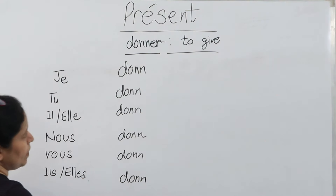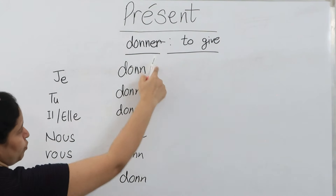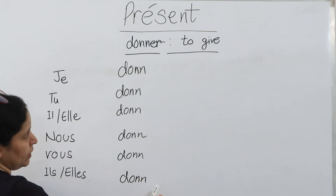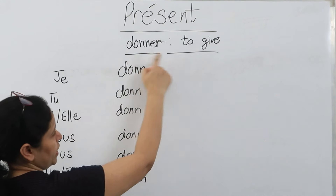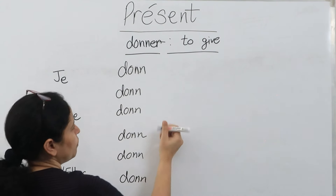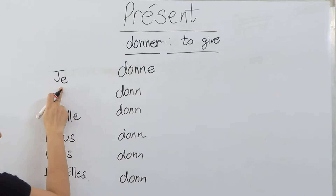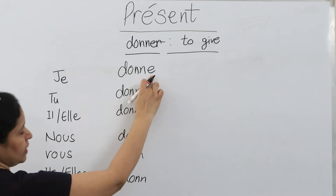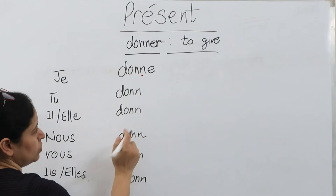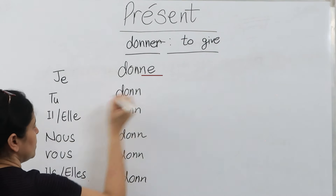The next step is to put the endings for the -er group verbs. The first ending for 'je' is -e.